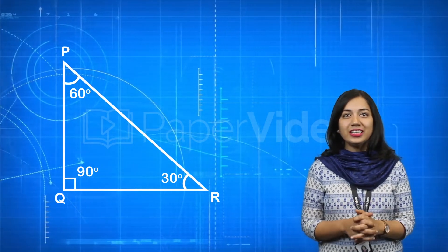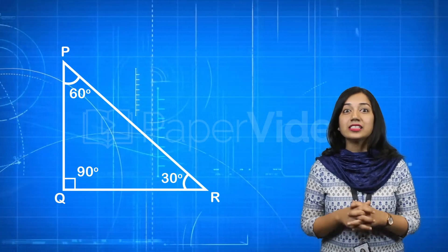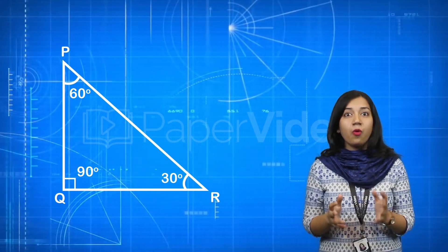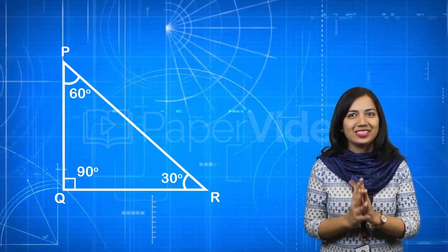Side opposite to 60 degree is QR and side opposite to 30 degree is PQ. Now what does the property tell us?